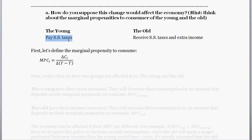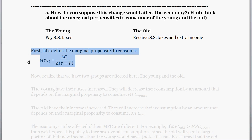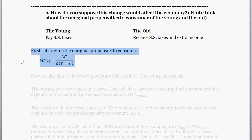In this example, taxes for the young increase, so the young have less disposable income to spend, while the elderly receive that extra money and have extra income. The marginal propensity to consume for each group is defined as: given a change in disposable income — that is, income minus taxes — how much does each group change their consumption?